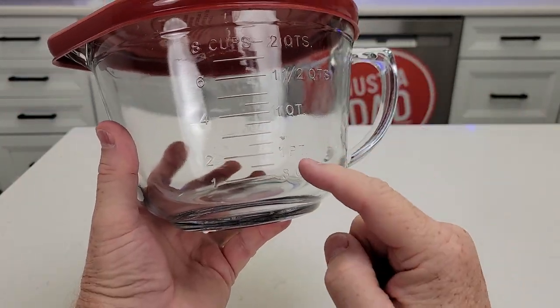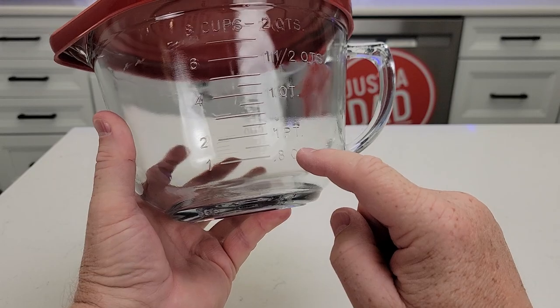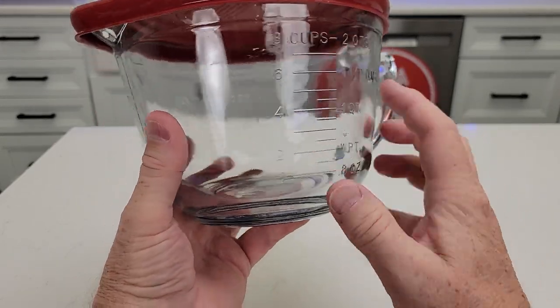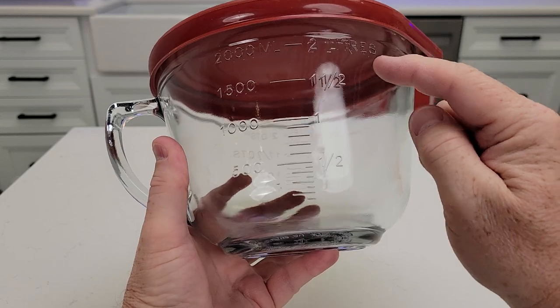It's got nice big markings on the side: 8 ounces, 1 pint, 1 quart, and then it's got cups. Over here we've got milliliters and liters.